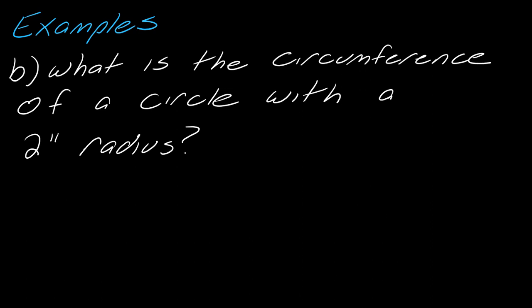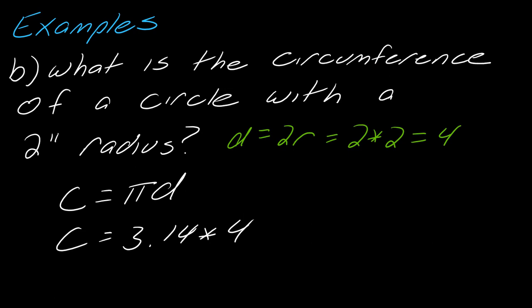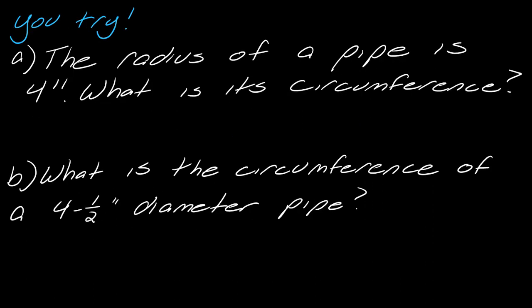Alternatively, I could use the pi·d formula and just convert: the diameter is two times the radius, so that's two times two, making the diameter four. Then 3.14 times 4 gives the same answer. Now pause the video here — I have two problems for you to try on your own. Pause, try these, and hit play when you're ready to see the solution.